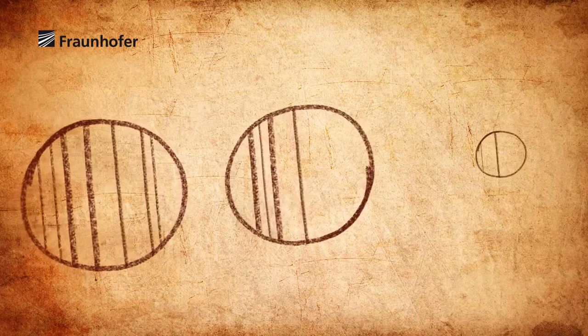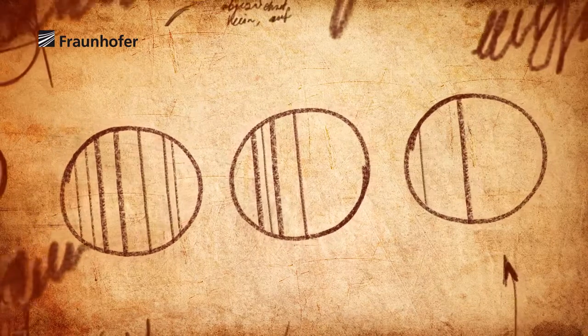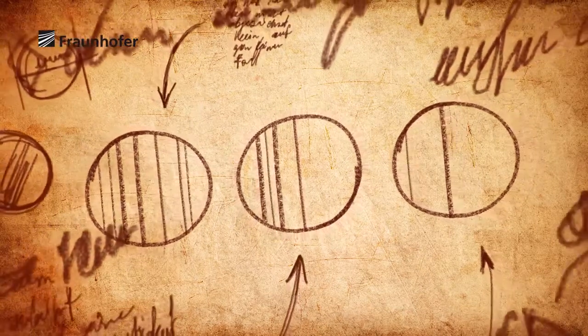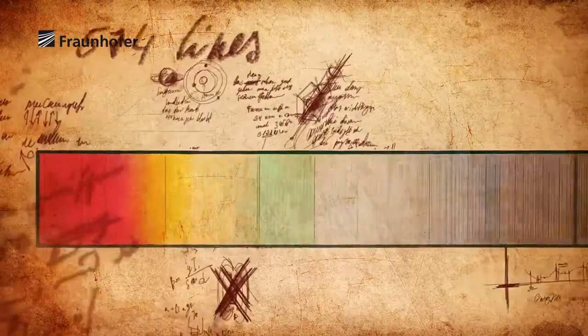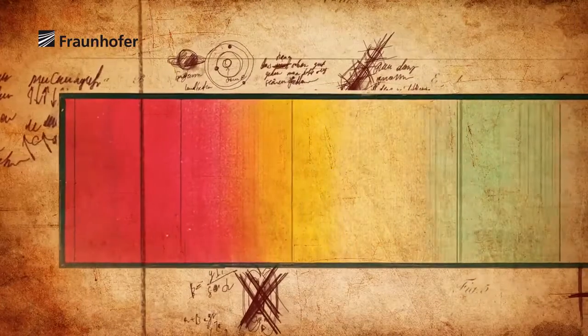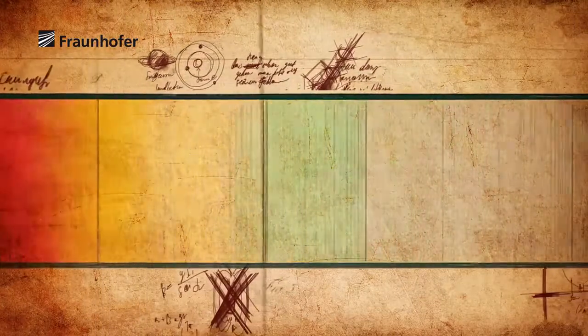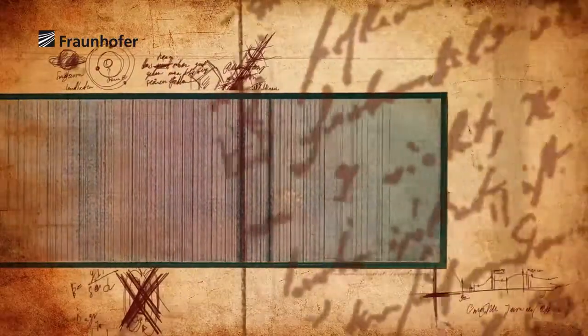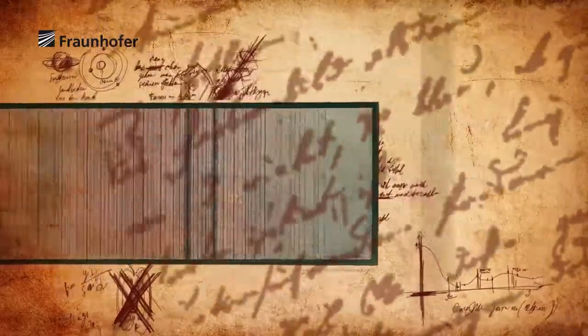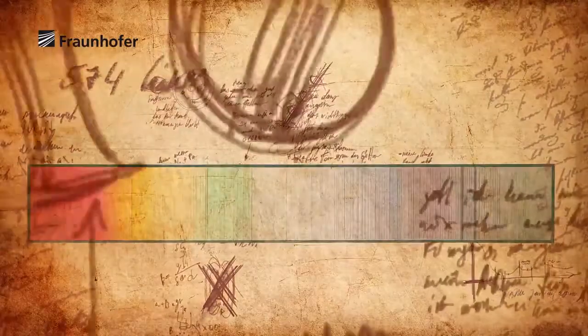In 1814, he discovered tiny dark lines. With exceptional accuracy, he measured and documented 574 lines. They would be key to the success of his research. With these dark lines, he found fixed reference marks, which he could use to measure the light refraction of different glasses, since they divided the colors clearly from each other.